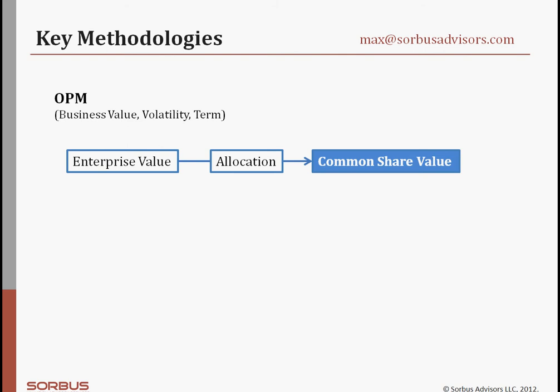The allocation methodology is based on an option pricing type analysis. The reason it's called option pricing is because every common share is viewed as an option, and the underlying asset that drives the value of that option is the overall business enterprise value. The more different tranches of equity we have in the capital structure, the more complex the allocation model will be. The key inputs to the allocation waterfall schedule are the business enterprise value, volatility of the underlying asset, and the term — how long before common shareholders may expect a return or be able to sell their shares.